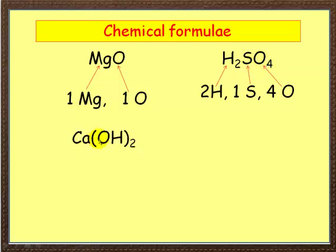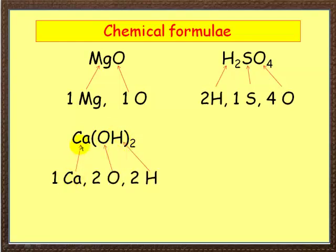Now the bracket multiplies everything inside by the number here. So 2 oxygens, 2 hydrogens. So we're left here with 1 calcium, 2 oxygens, 2 hydrogens.